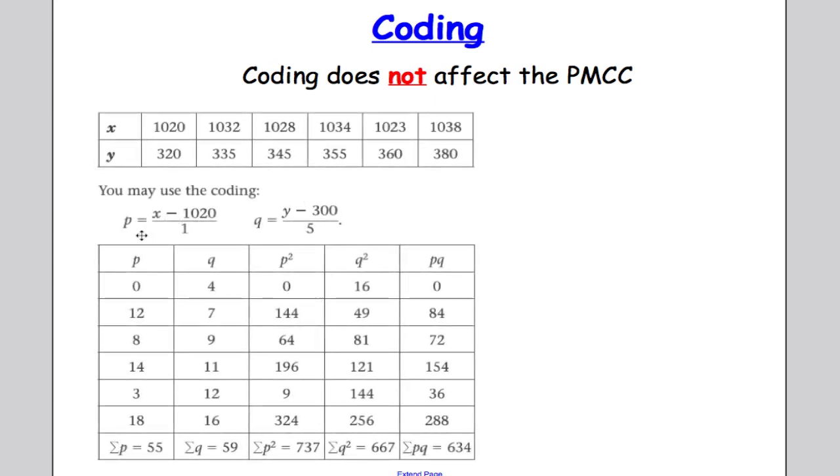Suppose we have a data set like so, and then we use coding p equals x minus 1020 over 1, q equals y minus 300 over 5. So we code all the data points just like we've done before in previous videos. We work out the sum of p, the sum of q, the sum of p squared, sum of q squared, and the sum of pq. We can evaluate r.